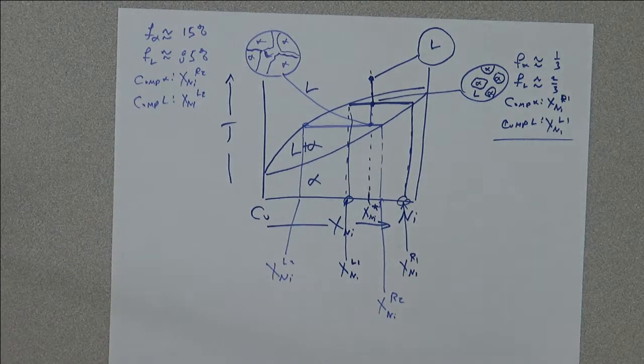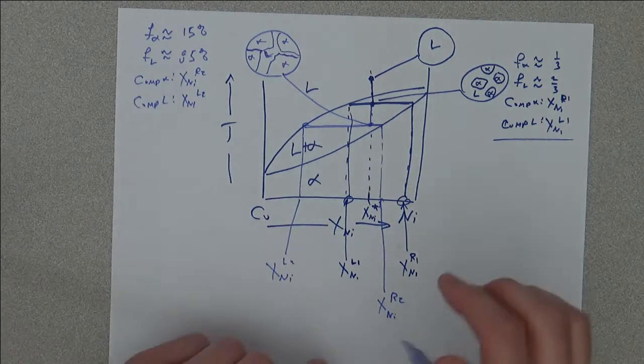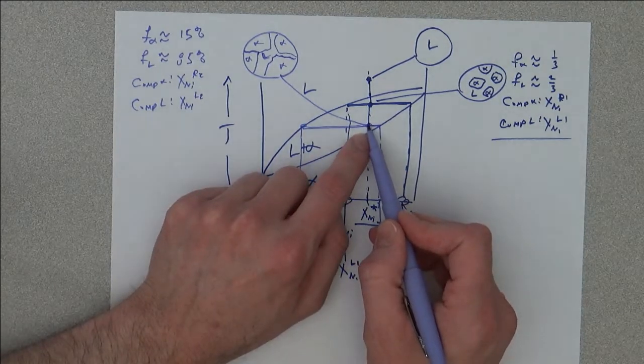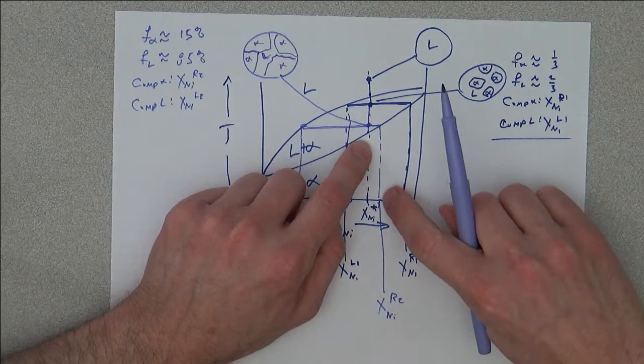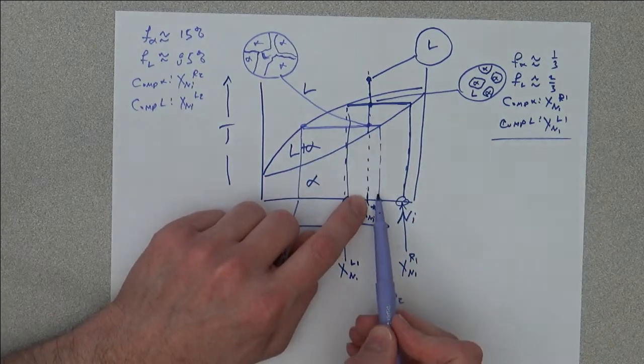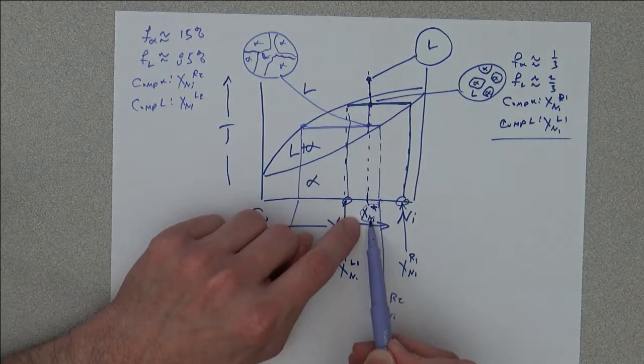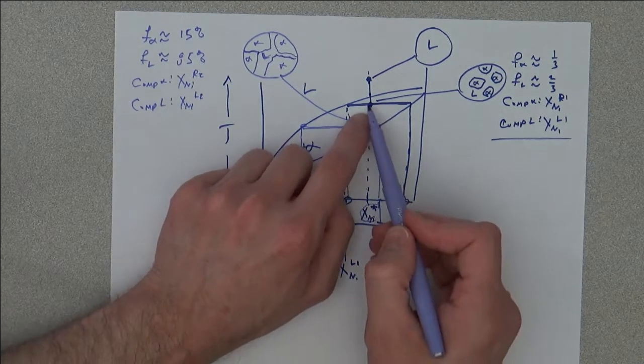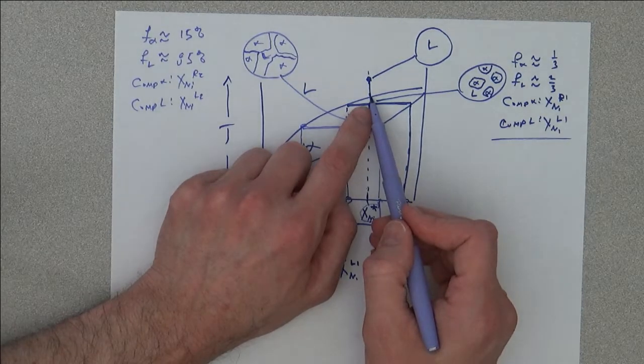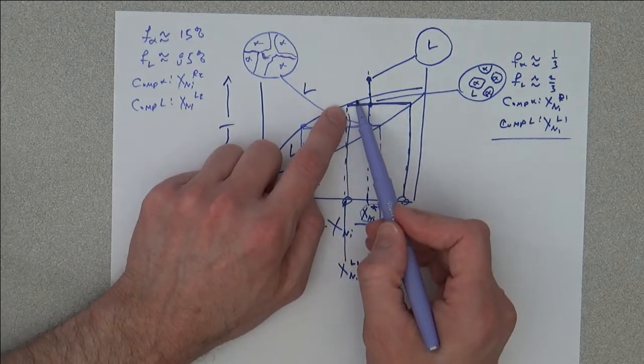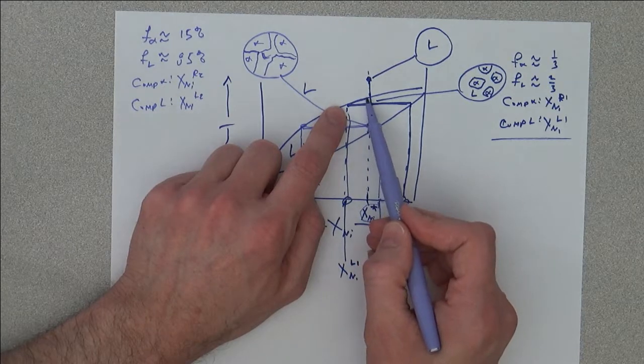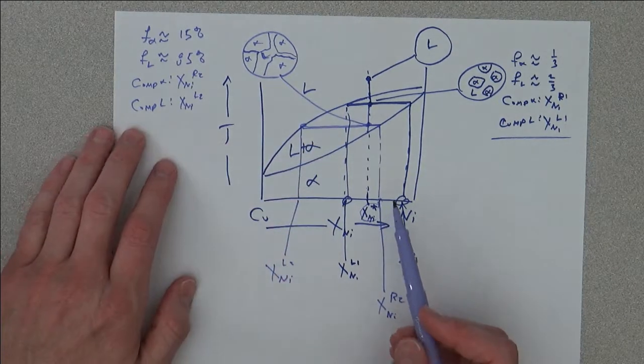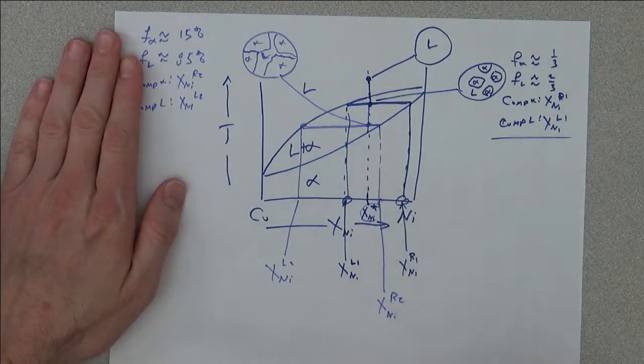It's worth pointing out here that as we approach the solidus, the composition of the solid gets closer and closer to that of the total system. Same way, as we get closer to the liquidus, the composition of the liquid gets closer to the composition of the pure system.